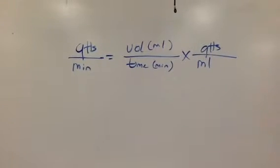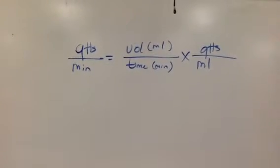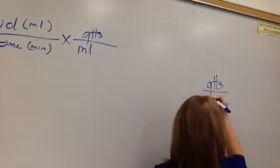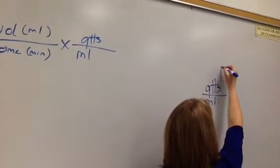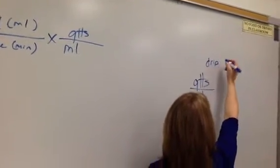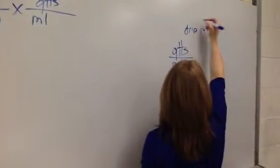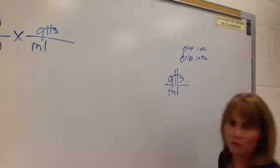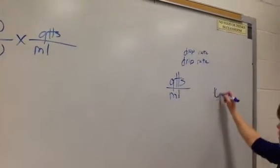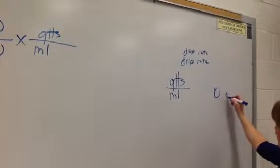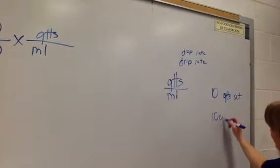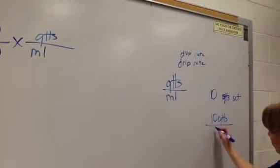Drops per ml. What is a drop per ml? How many drops? Drops per ml is a drip rate or a drop rate. You'll see it written both ways. If you have a drop set of 10, a 10 drop set, that means 10 drops are going to be in 1 ml.